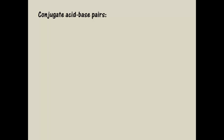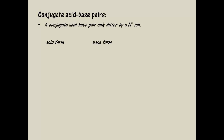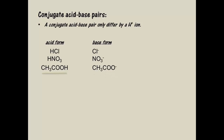You might begin to realise now that the only difference between an acid or base species is whether or not a hydrogen ion is attached. This gives us a pair of species which we call the conjugate acid-base pair — two chemical species that differ by only a hydrogen ion. By listing the acid form on one side and the base form on the other, we can see that chloride is the conjugate base of the hydrogen chloride molecule, and nitrate is the conjugate base of the hydrogen nitrate molecule. The ethanoate ion is the conjugate base of ethanoic acid, and consequently ethanoic acid is the conjugate acid of the ethanoate ion.